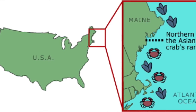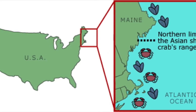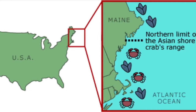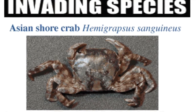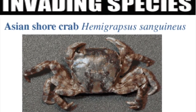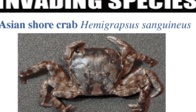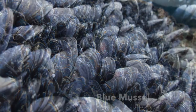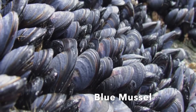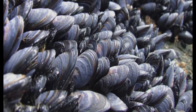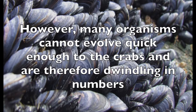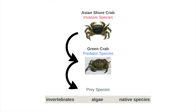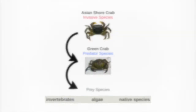Since the crab has invaded the coastlines of the United States, it has become most prevalent within the New England region, from the shores of Rhode Island and Massachusetts all up through the middle of Maine. Invasive species are out-competing many of the native species. With no competitors and an almost unlimited supply of food, they are very successful in their new environment. Some native species evolve as a result of the new crab presence — an example of this is the mussel, which hardens its shell when it senses a predator. However, many organisms cannot evolve quickly enough and are therefore dwindling in numbers.